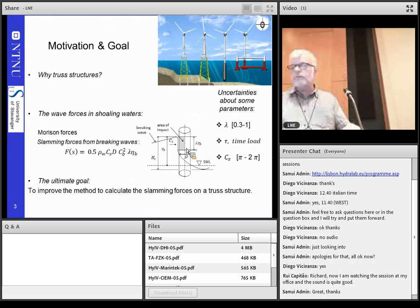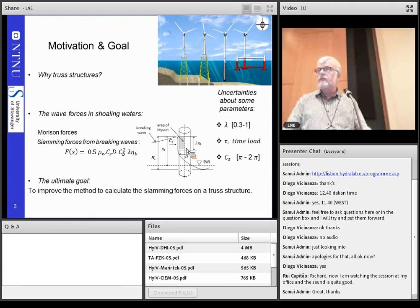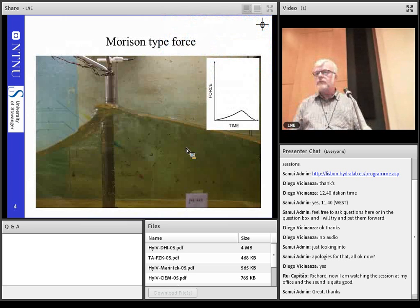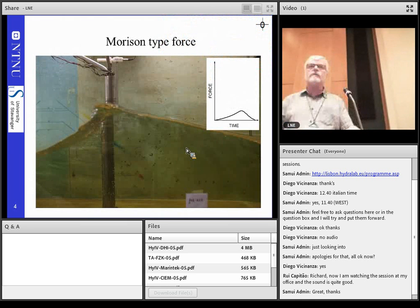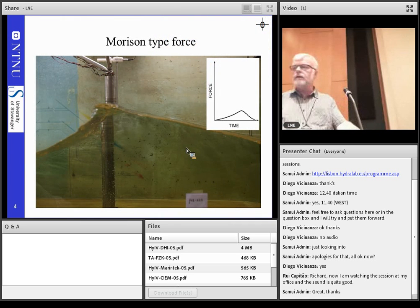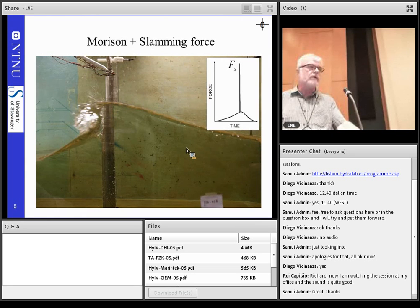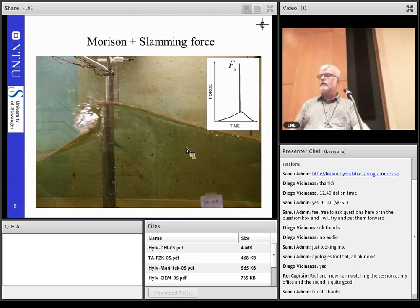So, the ultimate goal would be then to improve the method to calculate slamming forces on truss structures. So, this is a kind of idea. We have, if the waves doesn't break, we will just have what we call a Morrison-type formula that we could use for calculation of the wave forces. But, if you have a breaking wave hitting the structure, we typically will get an increased high value of the forces.